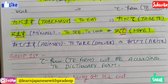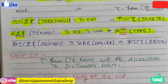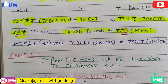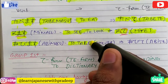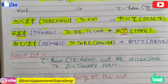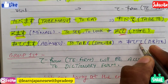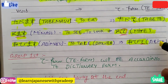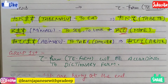Our final Group 2 example is abimasu, which is an exception. I'll drop the link in the description for dictionary form and masu form from our last videos. Abimasu means 'to take a shower', and this masu would be replaced with te, so abimasu would become abite in te form. This was Group 2.